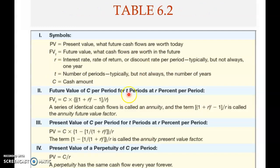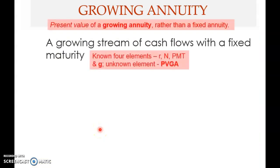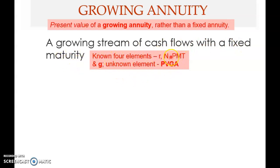This summarizes the formulas we have seen so far. Now we come to growing annuity — another type of annuity. We are looking at the present value of a growing annuity, rather than a fixed annuity as covered earlier in this chapter. A growing annuity represents a growing stream of cash flows with a fixed maturity.